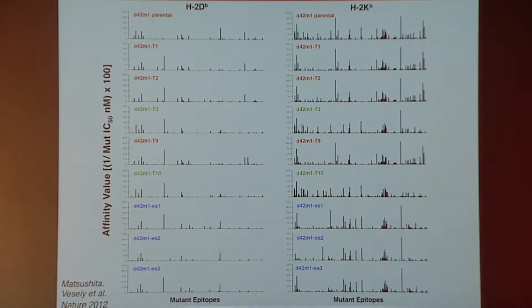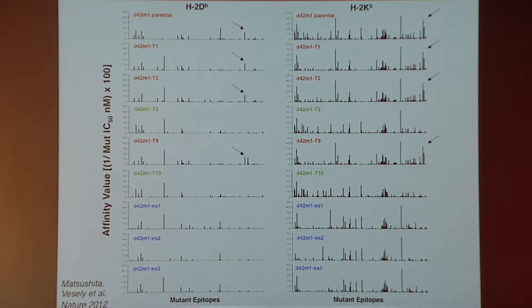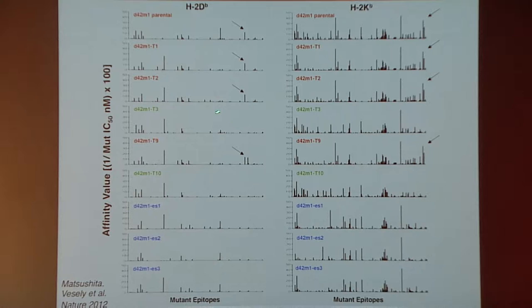When you look at this data, at first it seems incredibly complex. But as you stare at it more, you actually find that there are patterns. One pattern that was particularly interesting to us was that there were predicted epitopes — these examples shown here with the arrows — that were present only in the forms of D42M1 that were rejectable: that is, the parental D42M1 cell line and the three regressor clones T1, T2, and T9. These were not present when you looked at the progressor clones or any of the escape tumors.